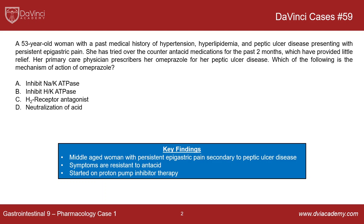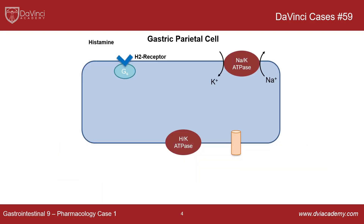The correct answer is inhibition of the hydrogen potassium ATPase, found in gastric parietal cells. This is a diagram of a gastric parietal cell. Up here you have the sodium potassium ATPase exchanging extracellular potassium for intracellular sodium, which is found in virtually every cell in the body. Down here, unique to gastric parietal cells, you have the hydrogen potassium exchanger, or pump, which pumps hydrogen out of the gastric parietal cell into the stomach lumen in exchange for a potassium.